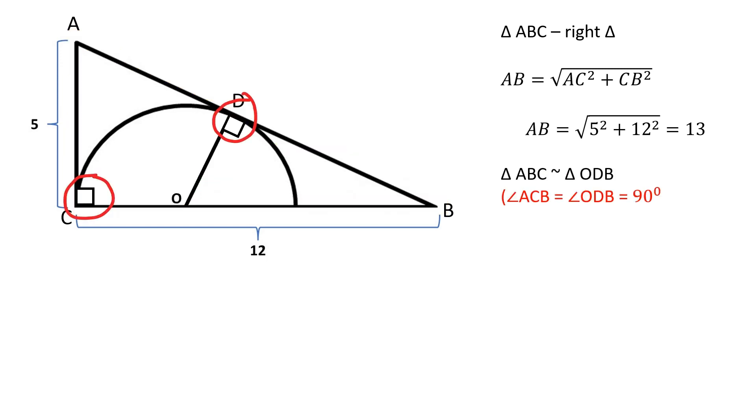These two angles are equal to 90 degrees because the radius is perpendicular to the tangent line, and angle CBA is shared by both triangles.